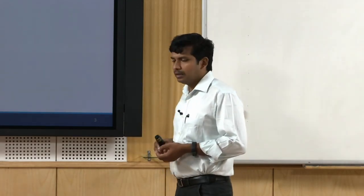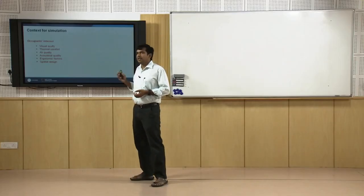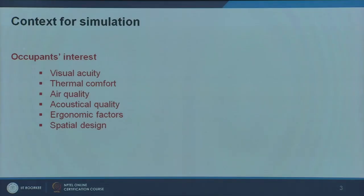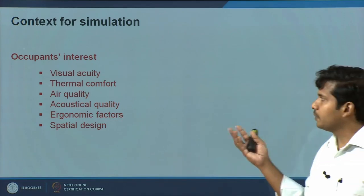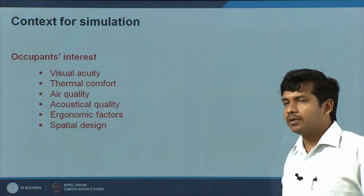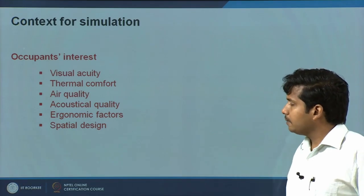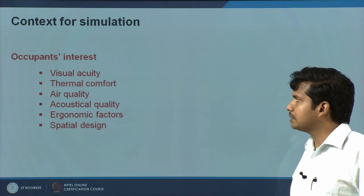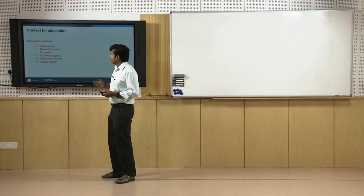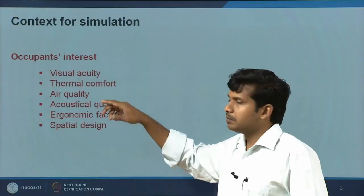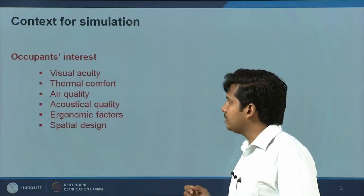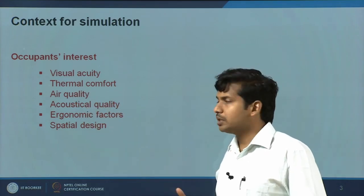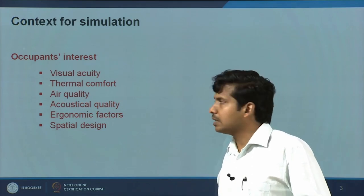What is the context for simulation? You can do simulations for three different parties. First, the occupant's interest — as a building occupant you need good visual comfort, visual acuity, thermal comfort, good air quality, acoustical quality, and ergonomic and spatial design factors. Primarily we do simulations for visual performance — daylight or artificial lighting simulation — and for thermal comfort. Air quality and acoustical quality simulations are also done.